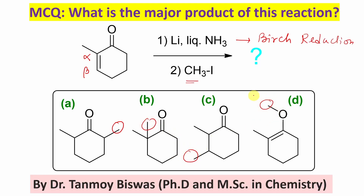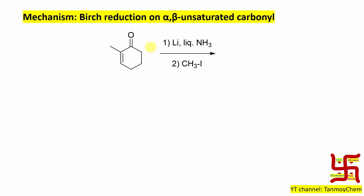So which one should be the product? That is the question — where will the methyl transfer happen? So obviously this molecule, after the reaction with lithium in liquid ammonia under Birch reduction conditions, produces a nucleophile or anionic, negatively charged intermediate.